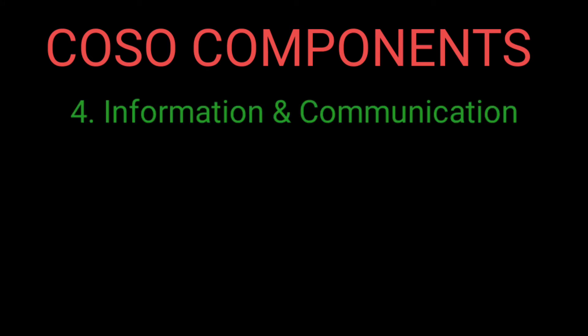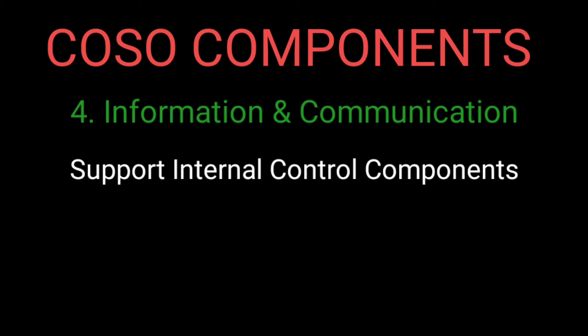The fourth component is Information and Communication, which relates to information gained that can support internal control components. It uses relevant quality information to support internal control functions and communicate internal control information both internally as well as externally.